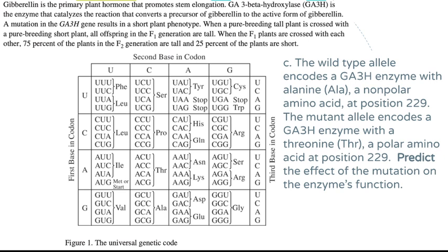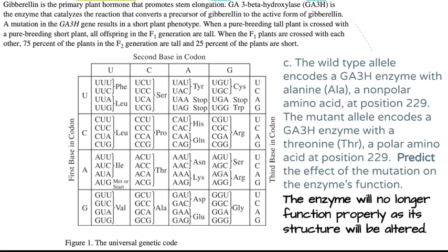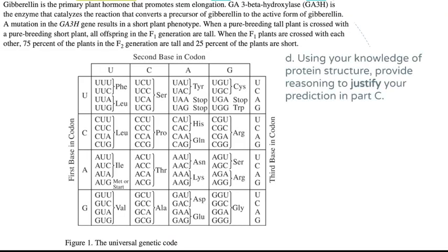Part D is where you explain why: changing from a non-polar to a polar amino acid alters the primary structure of the protein — the amino acid sequence changes. This leads to a change in tertiary structure because the protein will fold differently. Non-polar amino acids typically fold into the protein's hydrophobic core; a polar amino acid at that position will fold outward, trying to interact with the aqueous cellular environment.